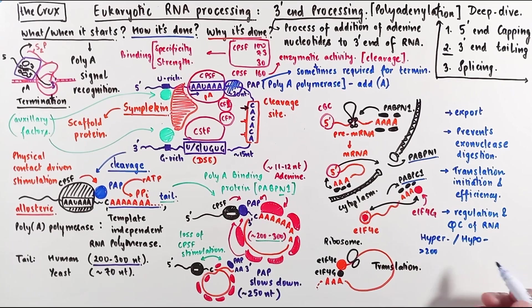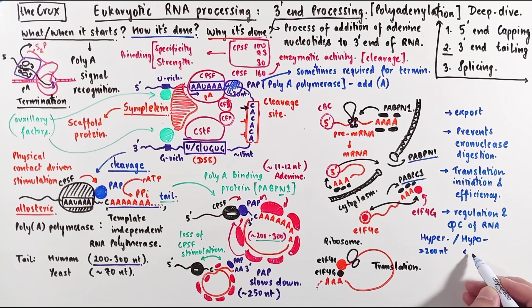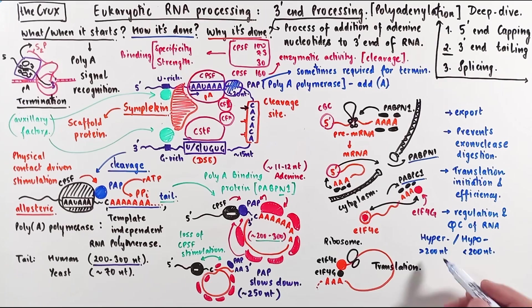In case of hyper, the length of polyA tail is too long. And in case of hypopolyadenylation, the polyA tails are too short. These hyper and hypopolyadenylated RNAs are usually sequestered away in the nucleus and they are marked for degradation. So the polyadenylation is sort of a way to ensure that only good quality RNA is exported into the cytoplasm for translation.